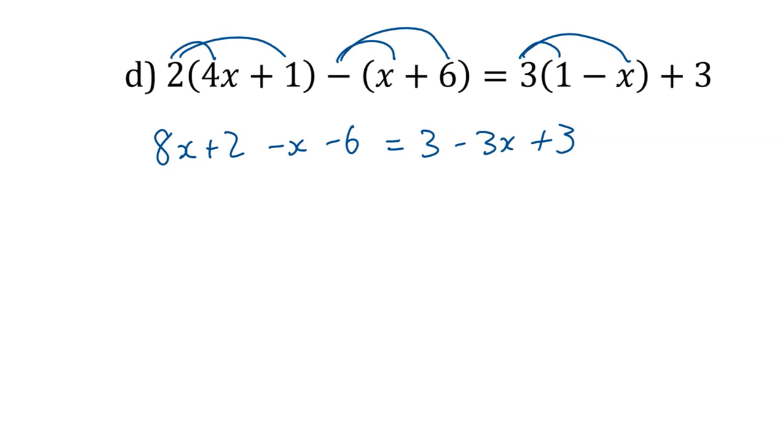So I got that. Two times four is eight, so eight X. Two times one is two. The positive X and positive six both became negative. Three times one is three, three times negative X is negative three X, and then you stop there. What's eight X minus one X? Eight minus one is seven. Two minus six? Negative four. Good.